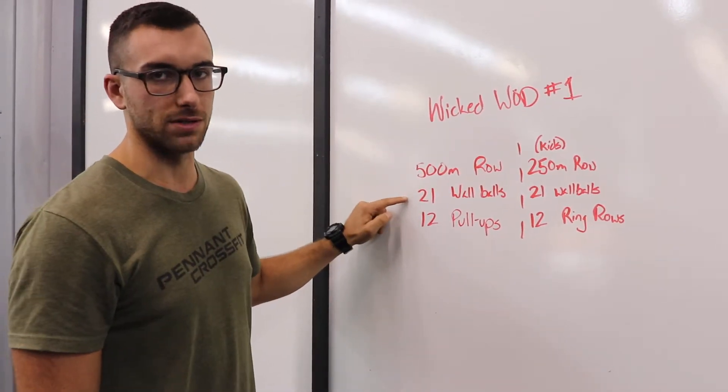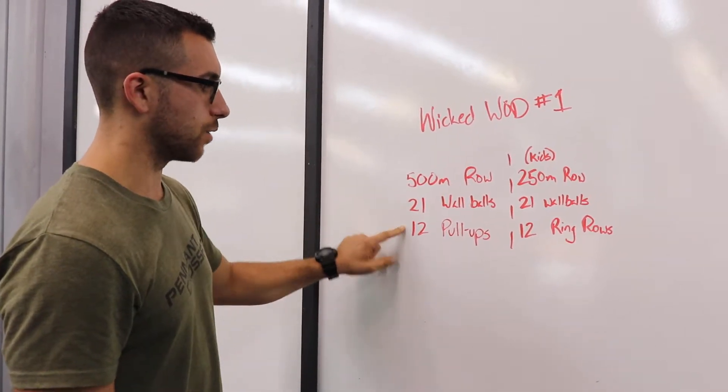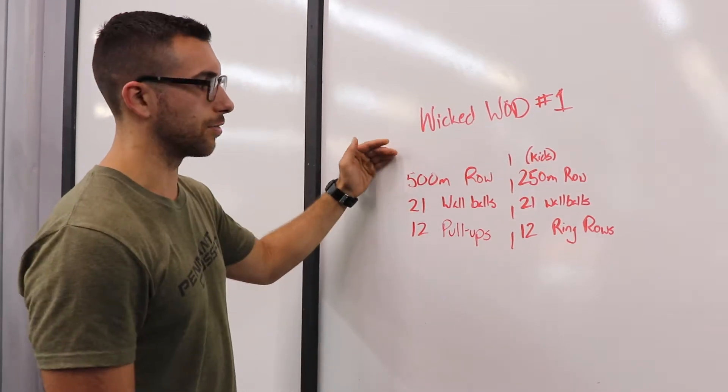Once partner one is done with those 21 wall balls, they'll move on to the 12 pull-ups. The rower will then move on to the wall balls, and partner three can come off the bench, get in there, and work on that 500 meter row.